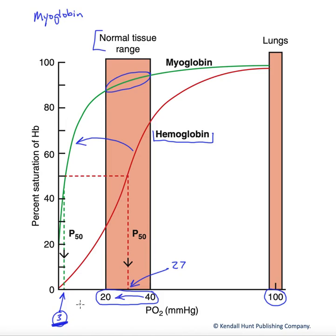Myoglobin is also helping to keep the oxygen inside the cell bound, which maintains the gradient for diffusion from the interstitium into the cell. The last thing to point out about myoglobin is that its curve is not sigmoidal — it's actually what we call hyperbolic. It's hyperbolic because it has a single subunit for binding oxygen and therefore cannot demonstrate subunit cooperativity.